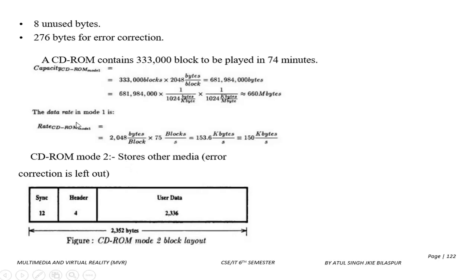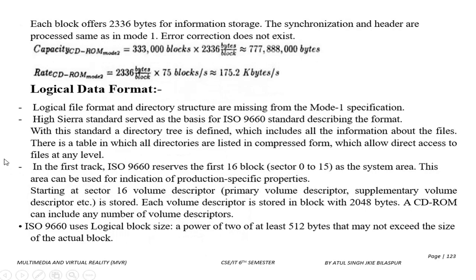Now we have seen Mode 1; similarly, Mode 2 also exists. Mode 1 stores computer data and Mode 2 stores other media like audio. In Mode 2, there is no error correction bit; only the synchronization bit, header, and user data remain.